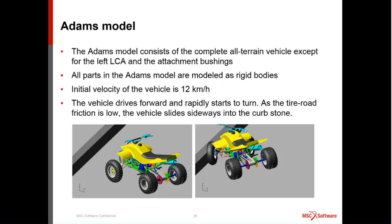The ADAMS model is almost the entire vehicle — the full ATV model except for that front-left lower control arm, which is modeled in MARC and therefore not visible in the ADAMS animation. All other parts of the ADAMS model are rigid bodies. The vehicle is moving at 12 kilometers per hour when the turn and skid begin, with modified friction coefficients between the road and the tires causing it to slide into a large curbstone.